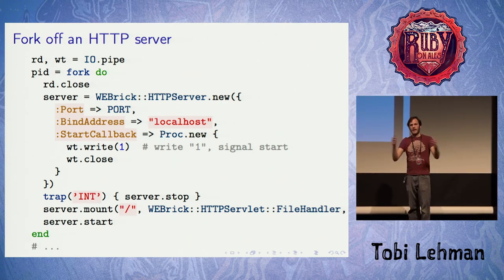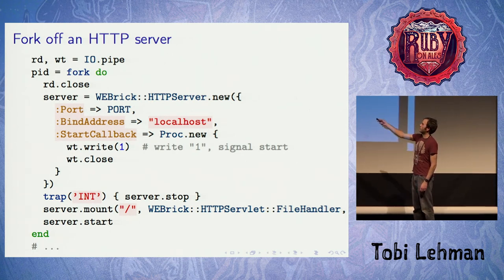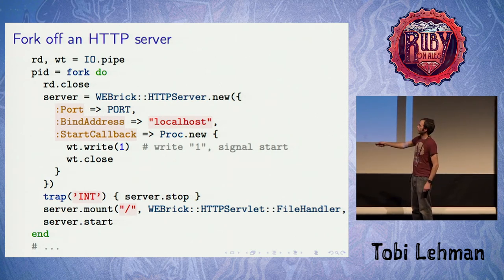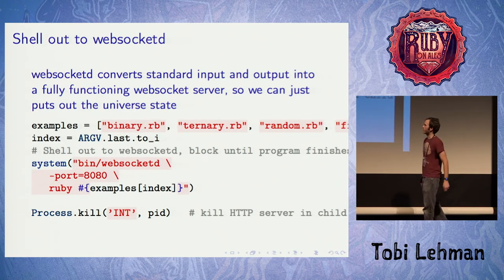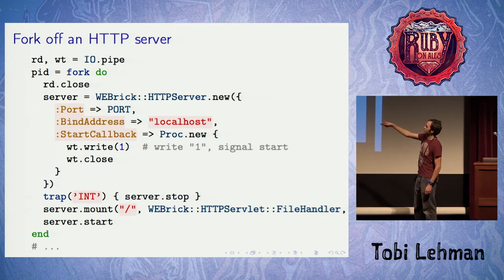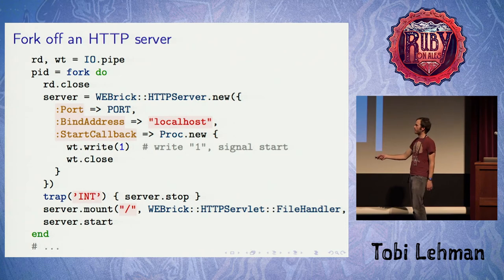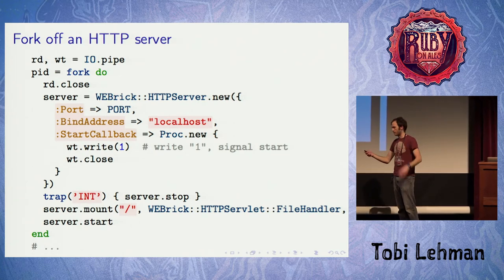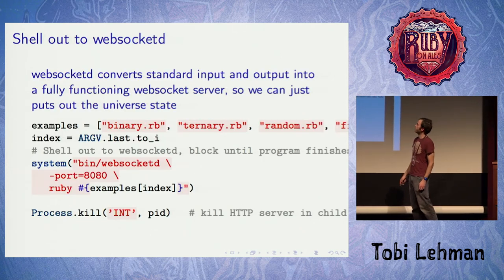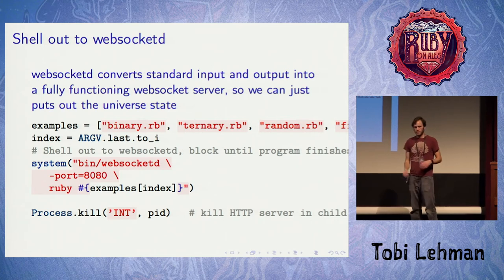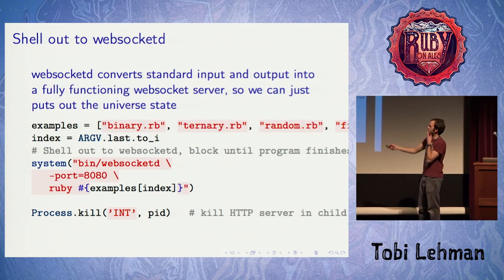Since we're running both a web server and a WebSocket server, we need to fork the web server into the background and then shell out to WebSocket D, since it's a separate command line tool. This server here is just WEBrick — I did this because I didn't want to pull in too many dependencies. This will kill the background process if it gets an interrupt like Control-C. We also mount slash so we can visit it in the browser. These examples here are some simulators I wrote using all that Ruby code, and we'll actually see this running.